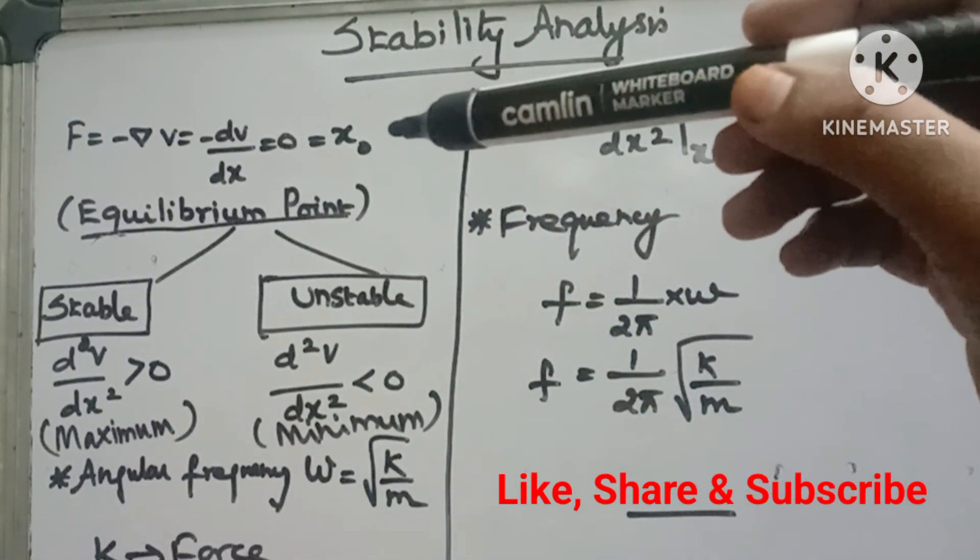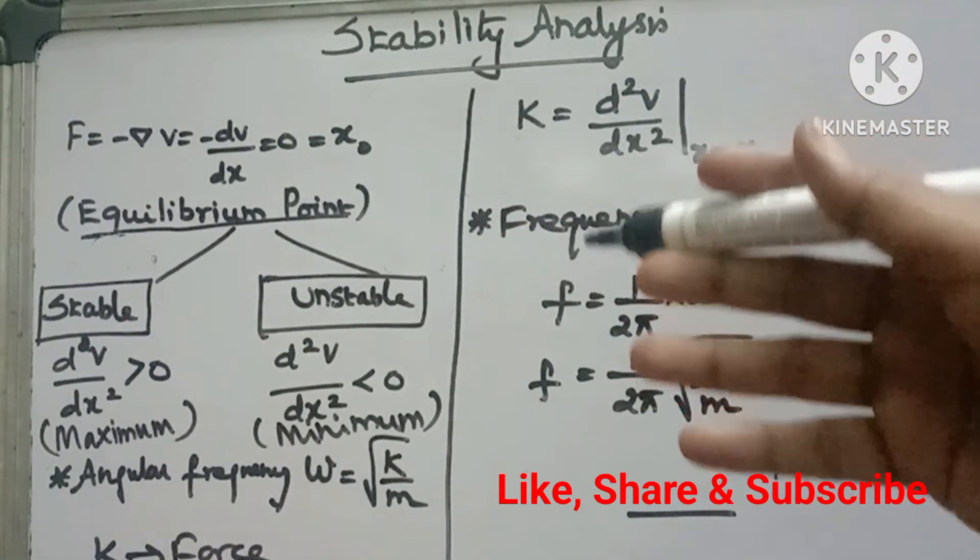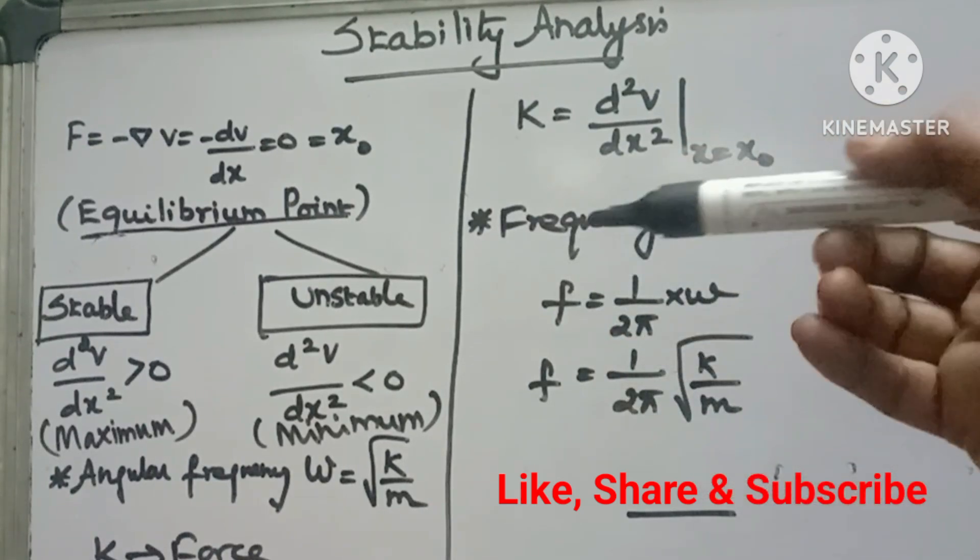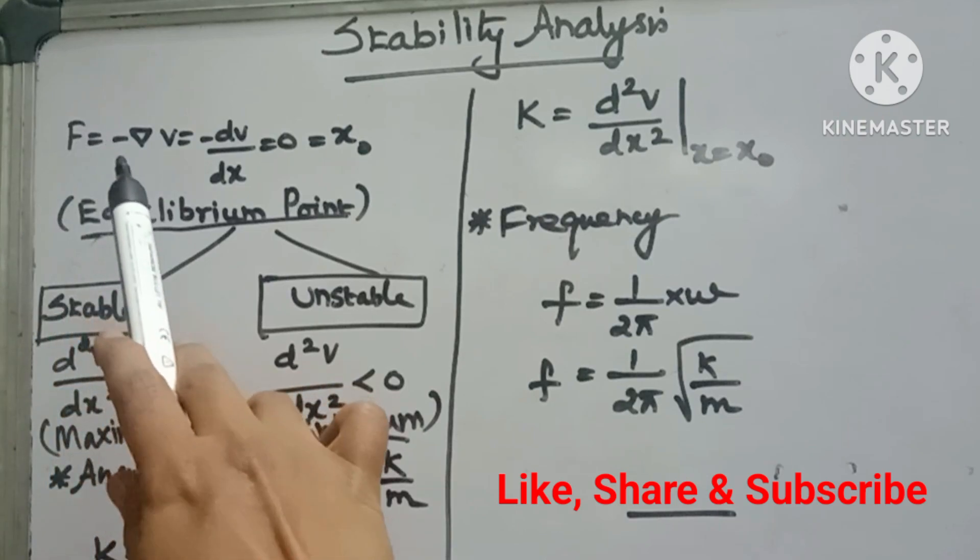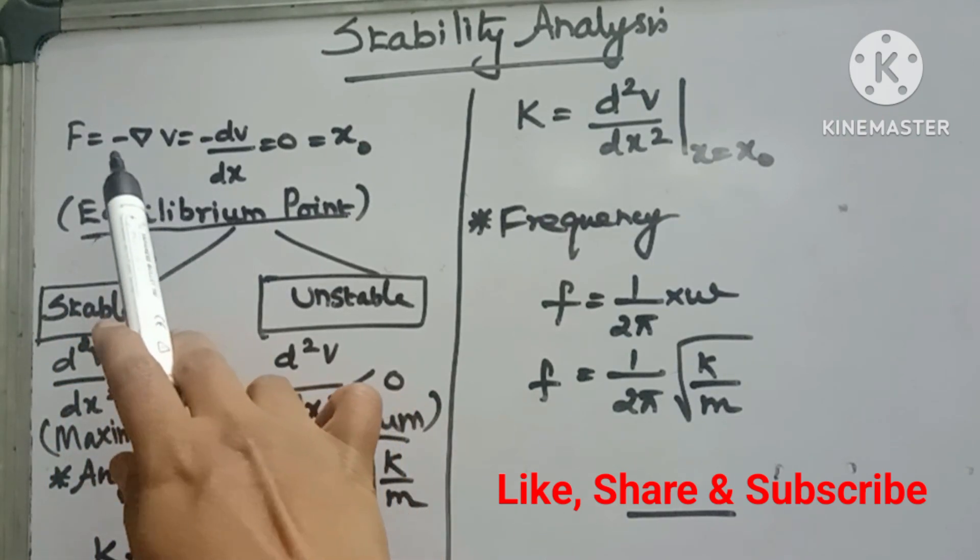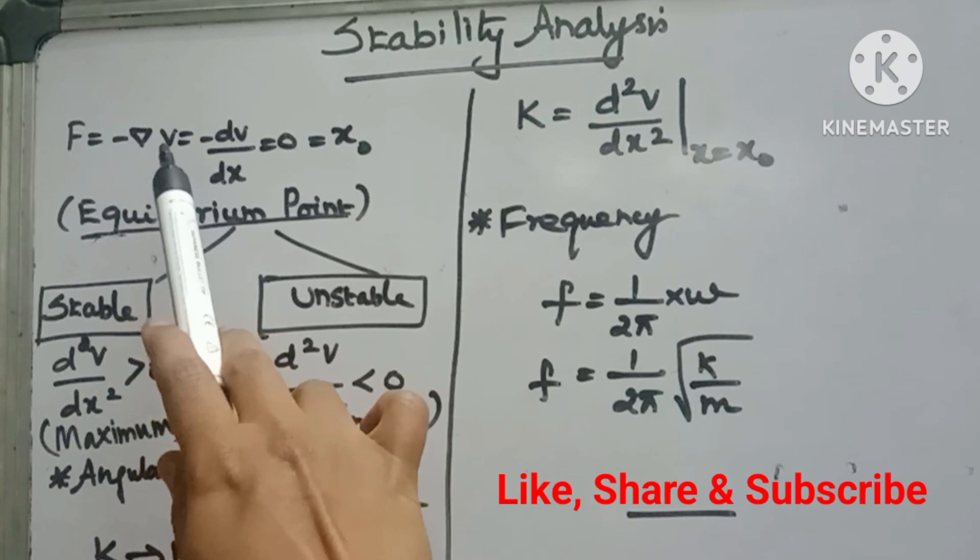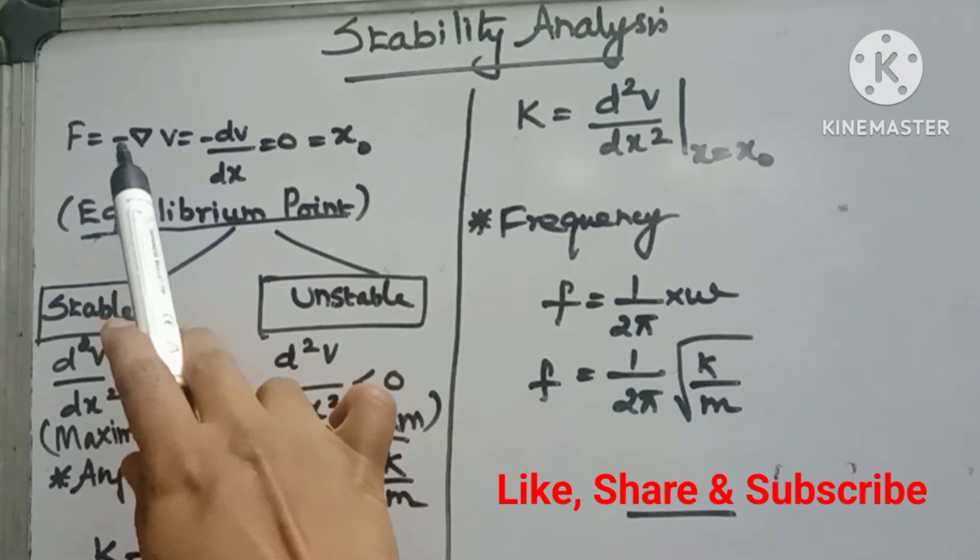For example, if we apply a force, the force's general relation is F = -∇V, that is negative of divergence of potential term. That is the equilibrium point.